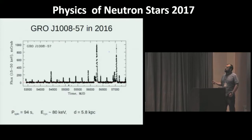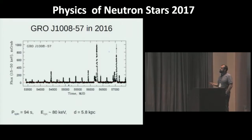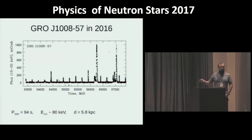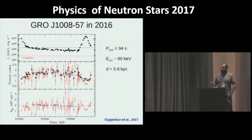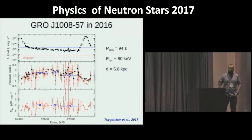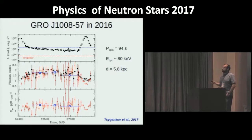We also detected an outburst from another source, RX J1008. We know everything about this source — pulse period, magnetic field, and distance — so we expected to use it to calibrate the propeller effect model and detect the transition slightly below 10^34 erg/s. Surprisingly, during the fading phase of the outburst, the source switched to some quasi-stable accretion and stalled at about 10^35 erg/s.